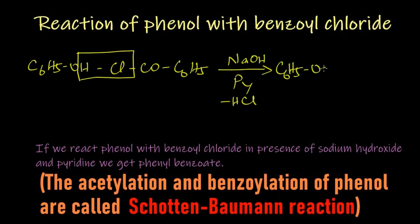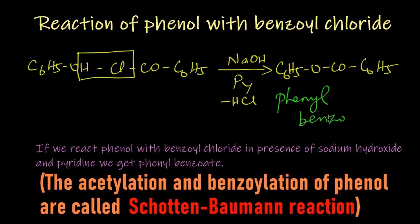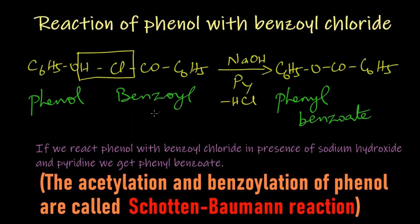The same way, this hydrogen and this chlorine will leave as HCl. The remaining parts will be attached together to form C6H5-O-CO-C6H5. The name of this compound is phenyl benzoate.